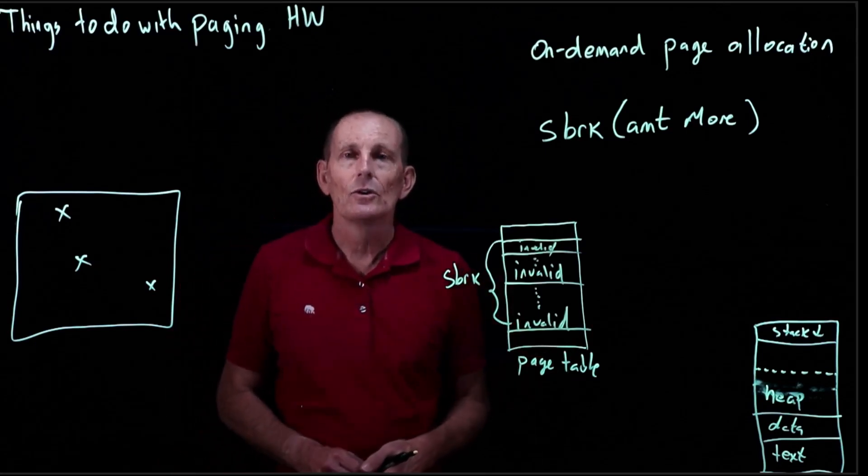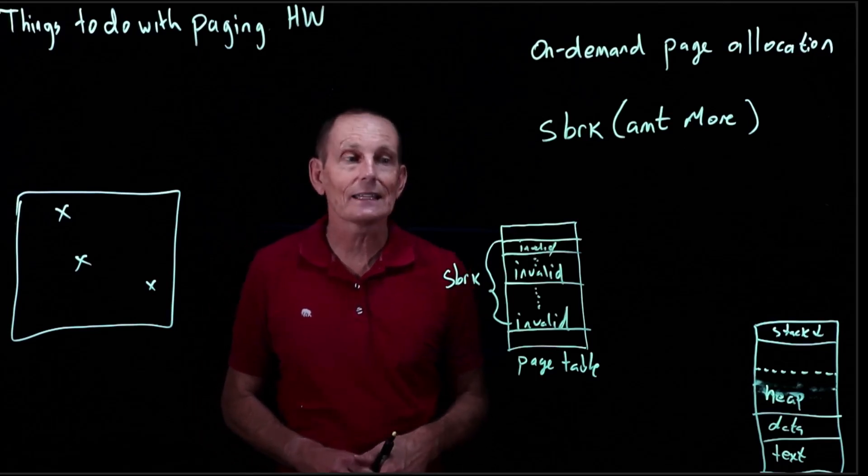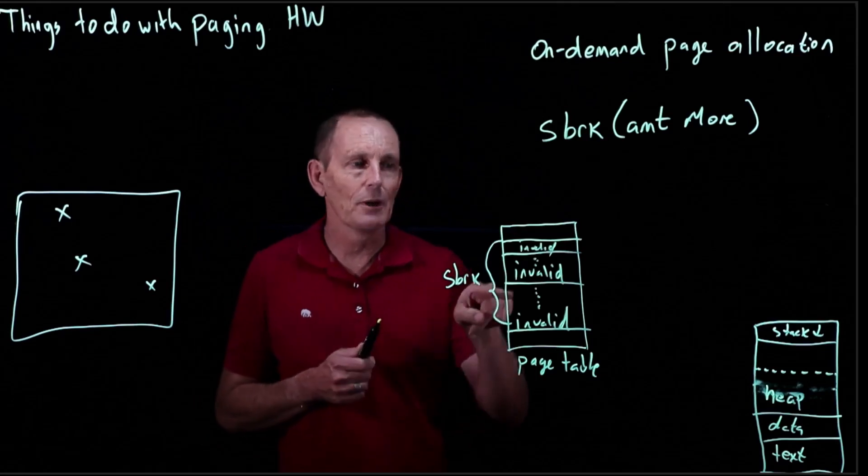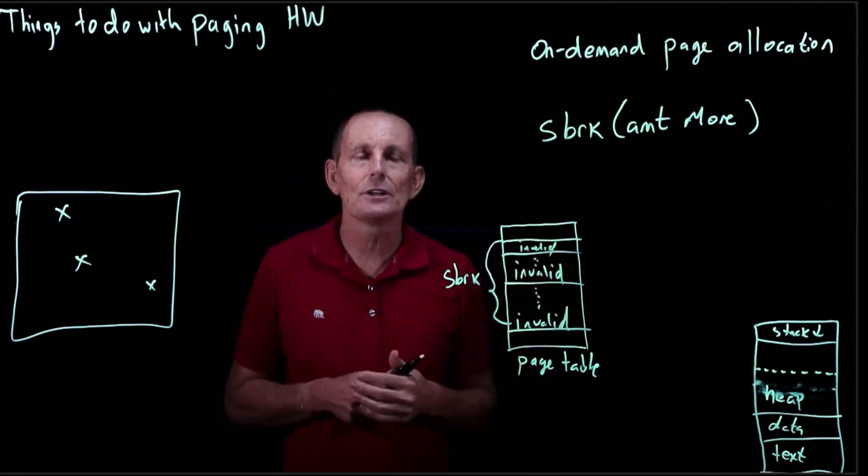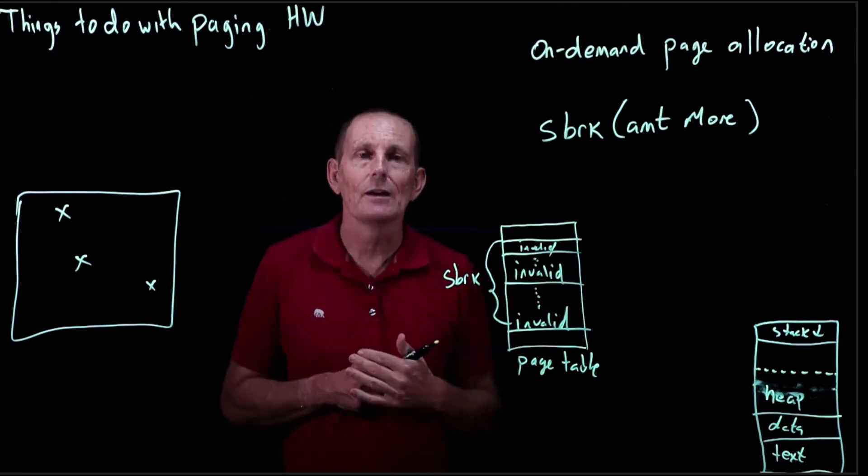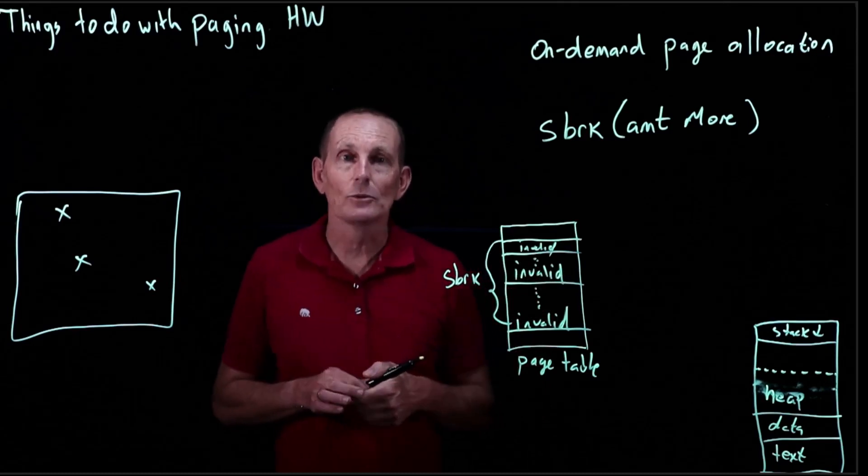And then when the process actually tries to access one of those pages, either read or write to it, it would go through the page table entry and we'd get an invalid page table entry not present. And that would cause a page fault. And then we're in the kernel.